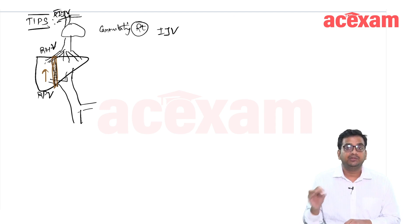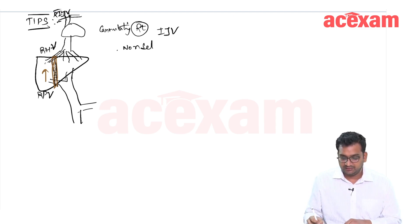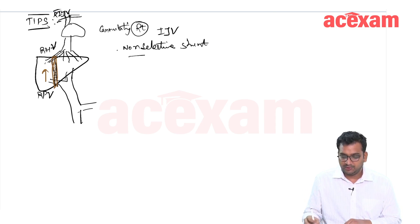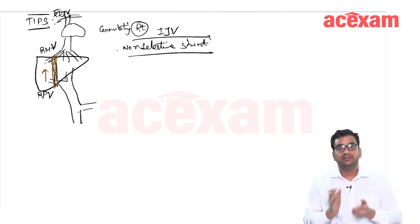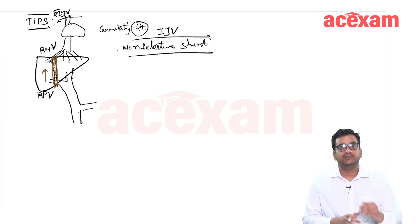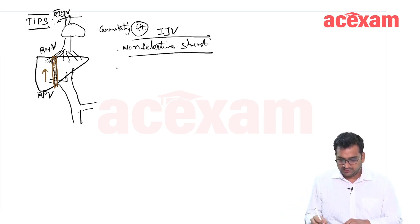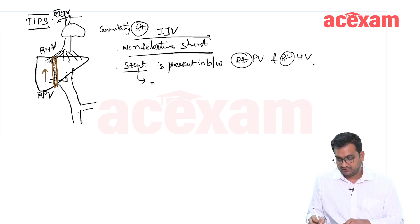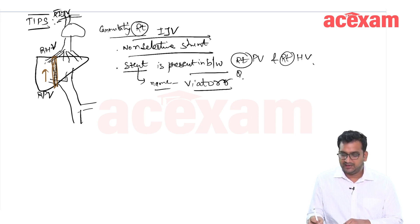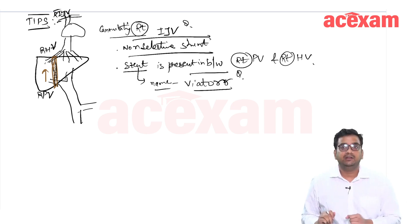TIPS stands for transjugular intrahepatic portosystemic shunt. It is a kind of non-selective shunt, because the whole of the portal flow can go towards the systemic circulation. We have not specified a single site to be decompressed — the whole portal system can decompress itself. The communication is present between the right side of the portal vein and the right hepatic vein.